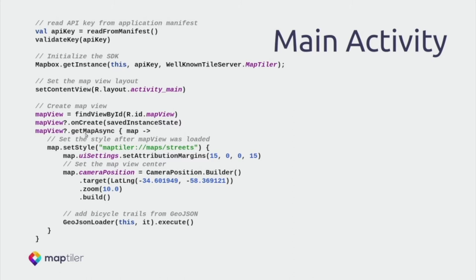You might notice there are a bunch of callbacks and lambdas — this is so we are not blocking the UI thread. It's the common way to do things on Android to keep the application responsive. That's standard stuff anyone will do when using the SDK.